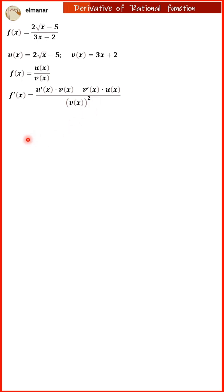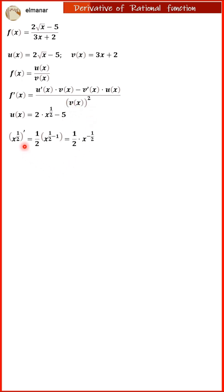Let's begin by calculating the derivative of u. The function u of x is 2 times the square root of x minus 5, which is 2 times x raised to the power of 1/2 minus 5. The differentiation rule for a power function gives us: the derivative of x to the power of 1/2 is 1 divided by 2 times the square root of x. Multiplying by 2, we obtain 1 divided by the square root of x. Thus, the derivative of u is 1 divided by the square root of x.